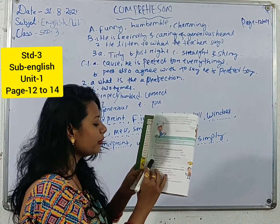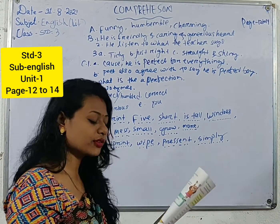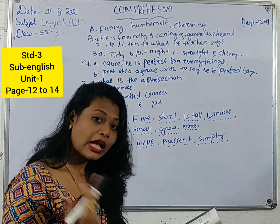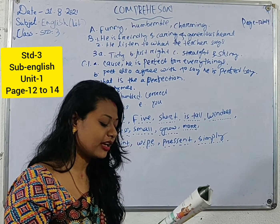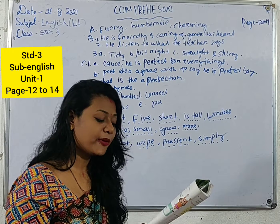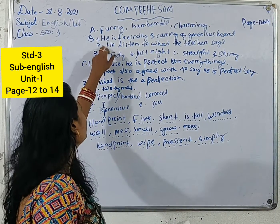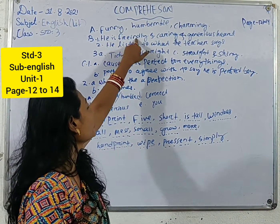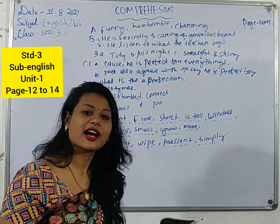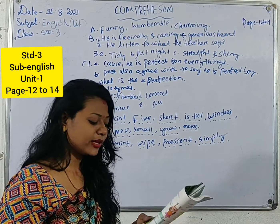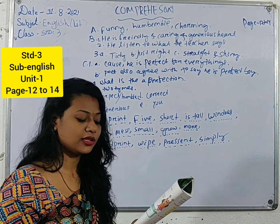Now come to your next section — answer the questions given below in your own words. First number: how does the poet describe his heart? He is friendly in nature and has a caring and generous heart.